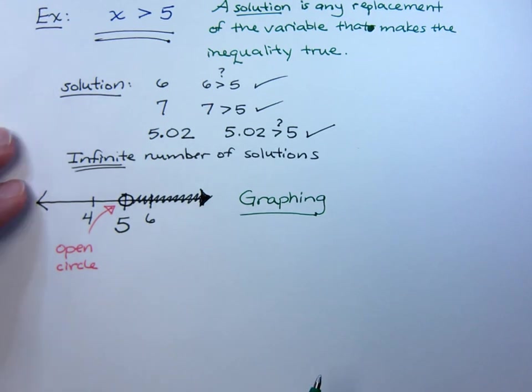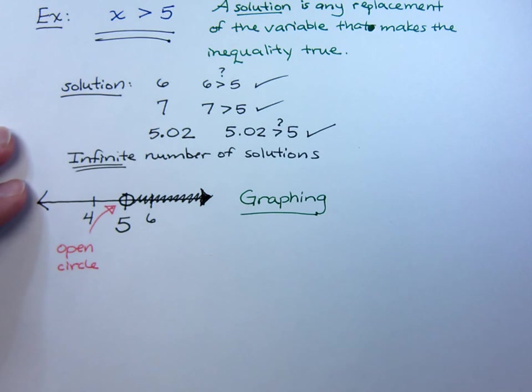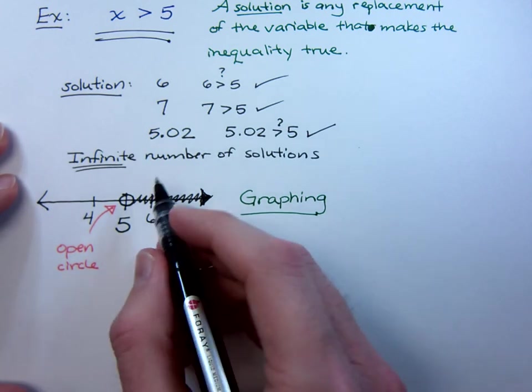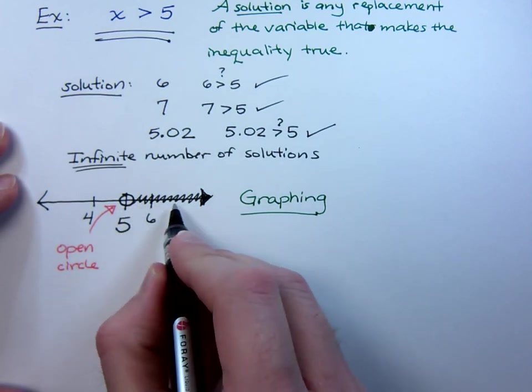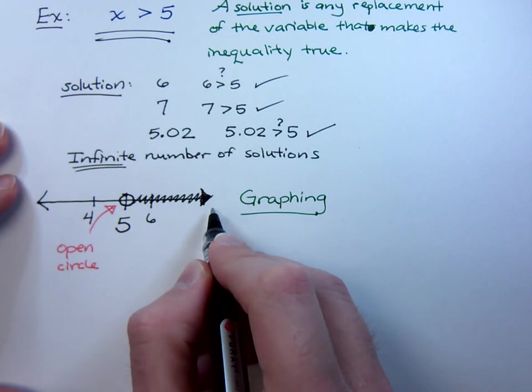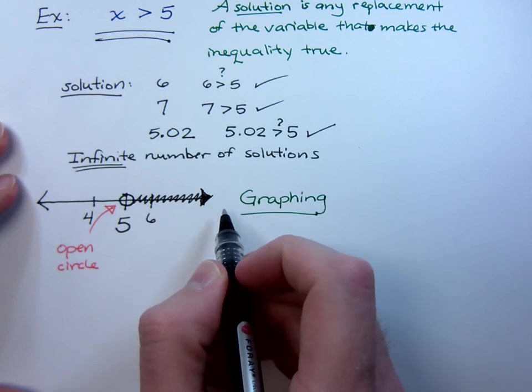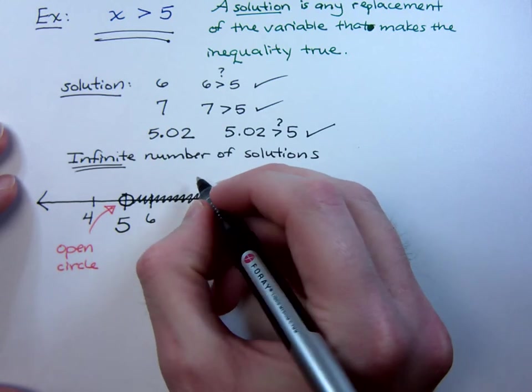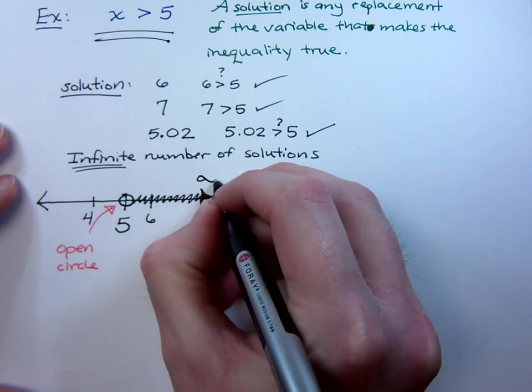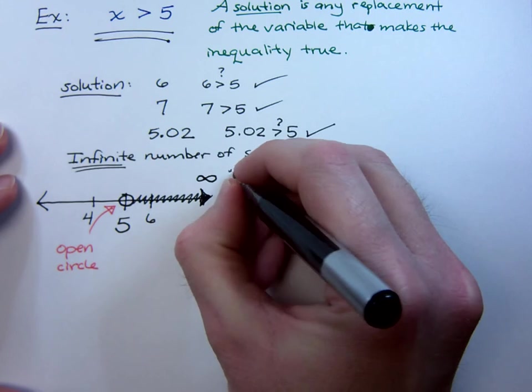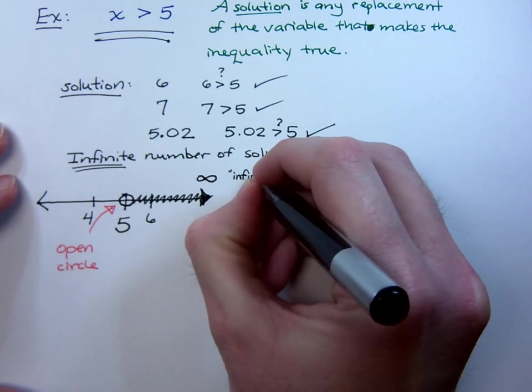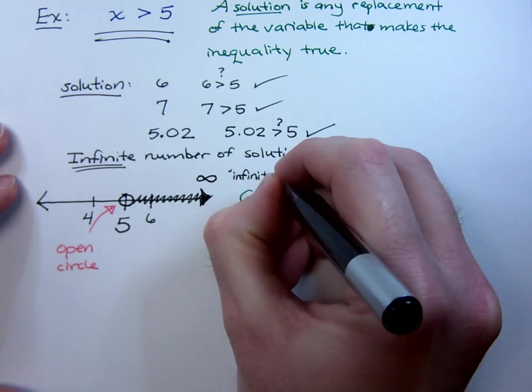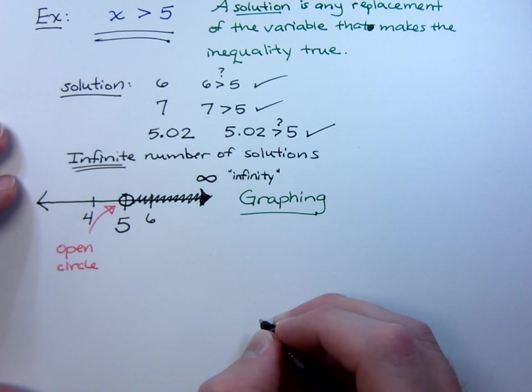Now, interval notation is really the preferred way of expressing your solutions. You notice that greater than 5 has no bound. You can keep getting as large as you want to, but you're never going to run out of numbers. We use this symbol right here, called infinity, to represent the unboundedness of the real numbers.